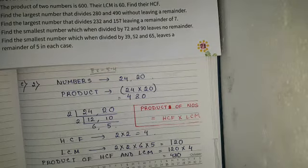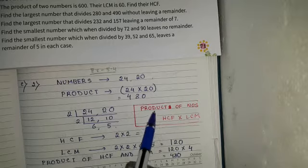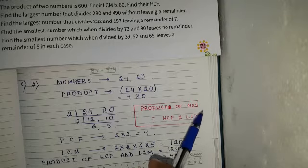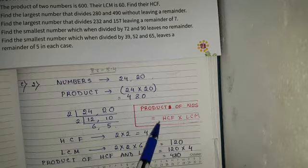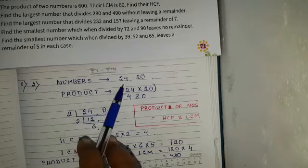Dear students, today we will continue Exercise 5.4, sum number C. Here we will learn a new formula: product of numbers equals HCF into LCM. In sum number C, equation number 2, the given numbers are 24 and 20.